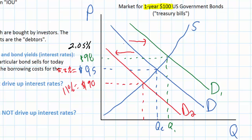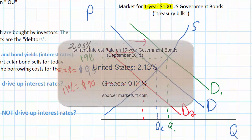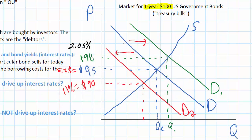Two examples are the United States and Greece. The United States has very stable economic growth, a GDP that accounts for about one quarter of total world output, and is highly likely to repay any debt it incurs. Therefore demand for US government bonds is high relative to countries like Greece, which are much less stable and more likely to default on their debt. As a result, interest rates on US government bonds are much lower than those for countries like Greece.